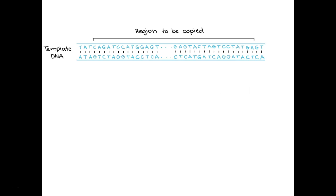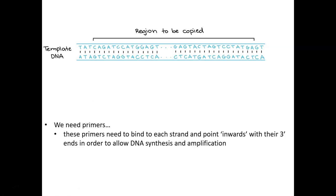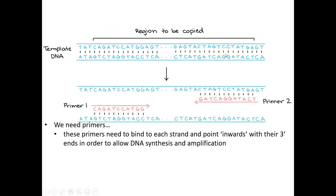Let's talk about primers. Imagine this is the DNA region we're trying to copy by PCR — the dots in the middle represent a lot more sequence in between. We need to design primers against these sequences. These primers need to bind to each strand — the top strand and the bottom strand — in such a way that the 3' end of the primer points inwards towards the region we wish to amplify. The 3' end of the top strand primer needs to point inward, and the primer that binds to the bottom strand also needs to have its 3' end pointing inward towards the sequence to amplify.